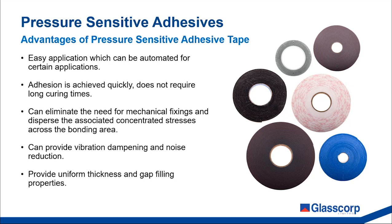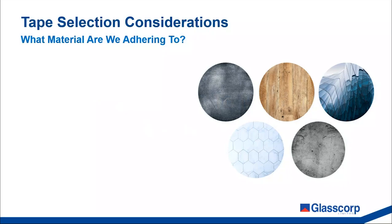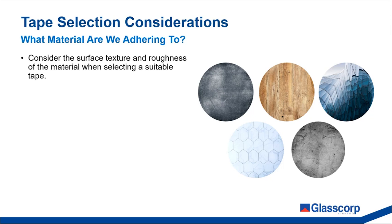Tapes provide uniform thickness and gap-filling properties, which can be difficult to achieve with liquid applied sealants. In this next section we'll cover some of the considerations you should make when selecting a suitable pressure sensitive adhesive tape. The first consideration is what material or substrate are we trying to adhere to — you will need to consider the surface texture and roughness of the material.